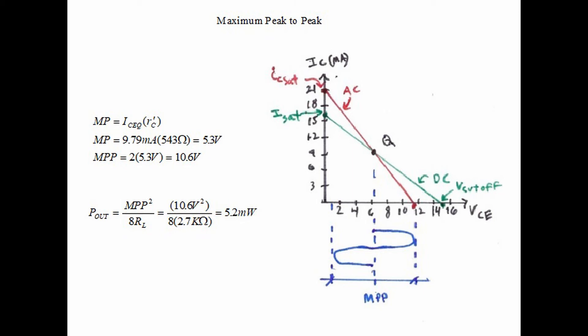But we have formulas to help us calculate maximum peak. We start with maximum peak and we say it's ICQ times R prime C which in this case is 5.3 volts. Then maximum peak to peak is 2 times 5.3 volts, which is 10.6 volts. So we were pretty close with our graphical approach. The maximum signal MPP is 10.6 volts.